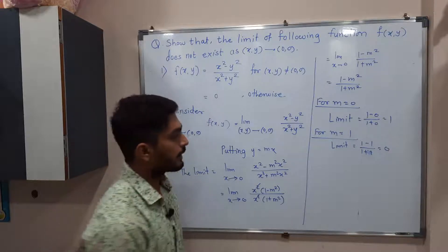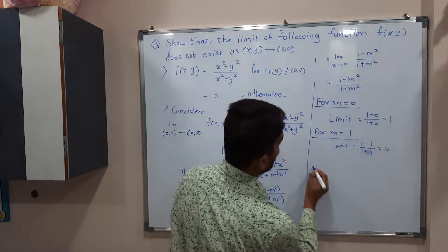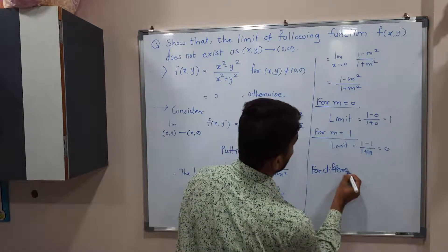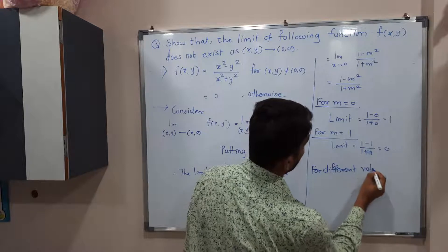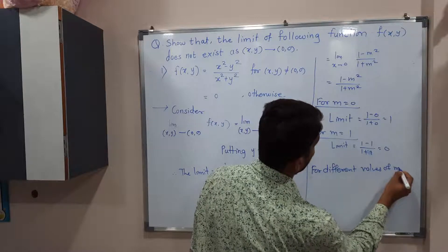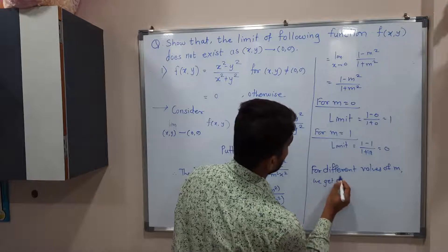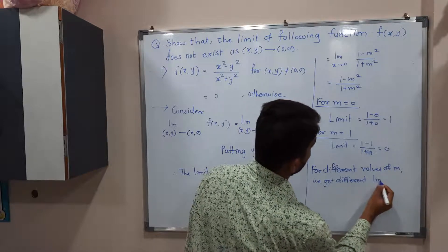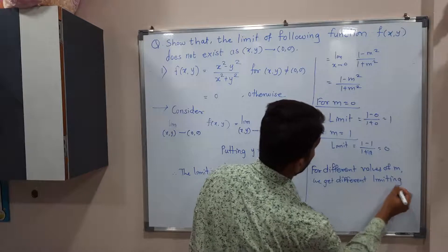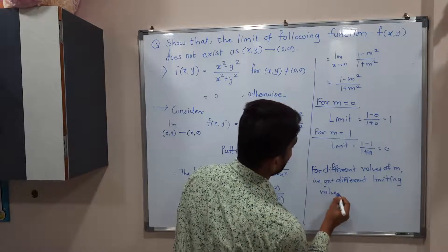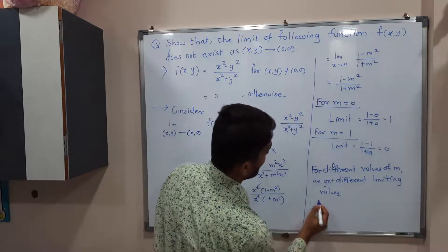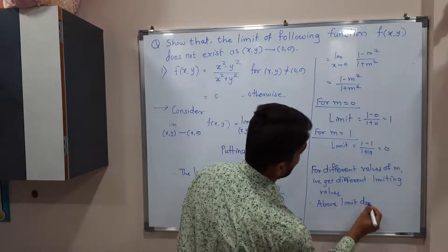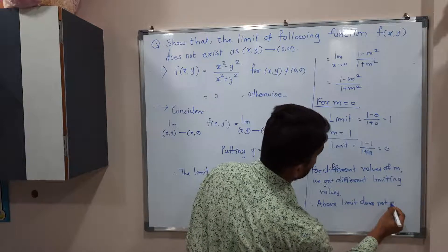Therefore we can declare: for different values of m, we are getting different limiting values. For different values of m, we get different limiting values. Therefore, the above limit does not exist.